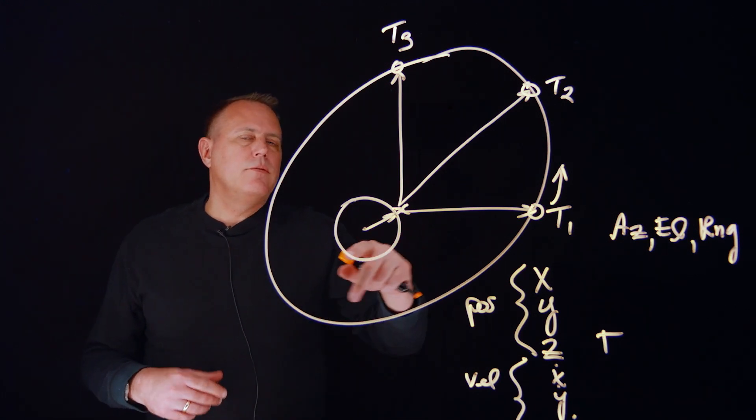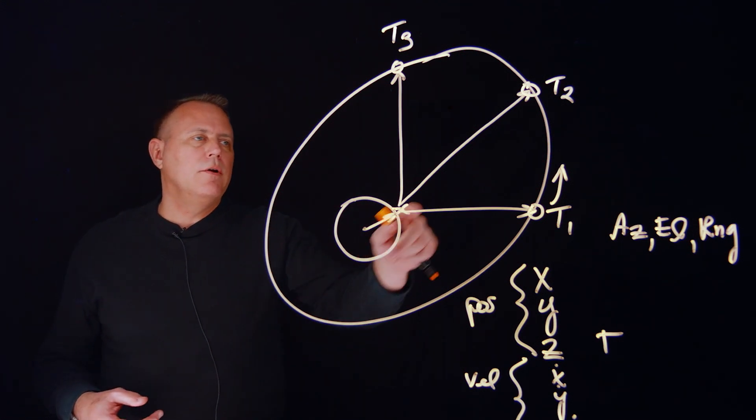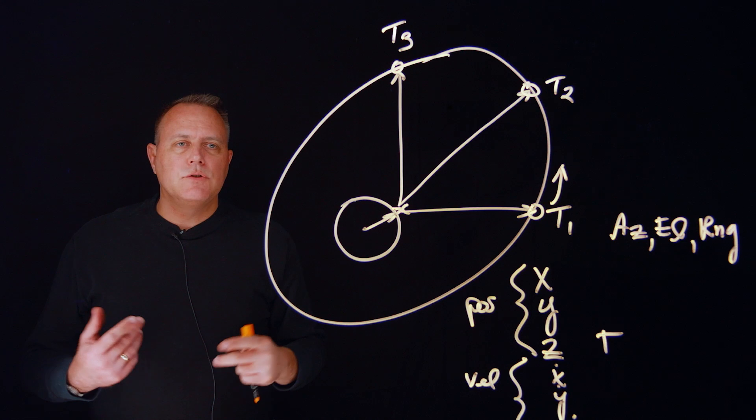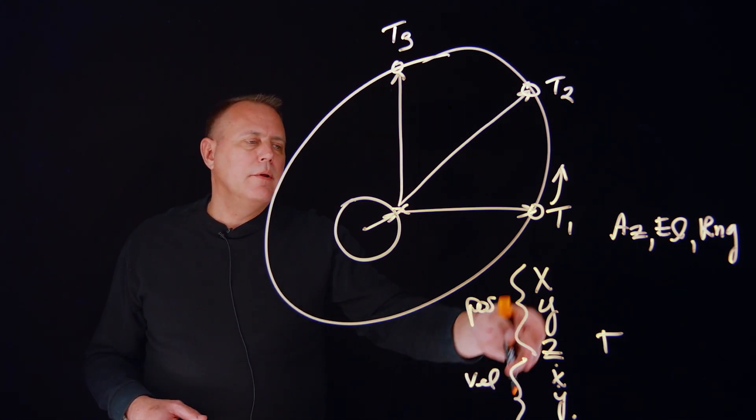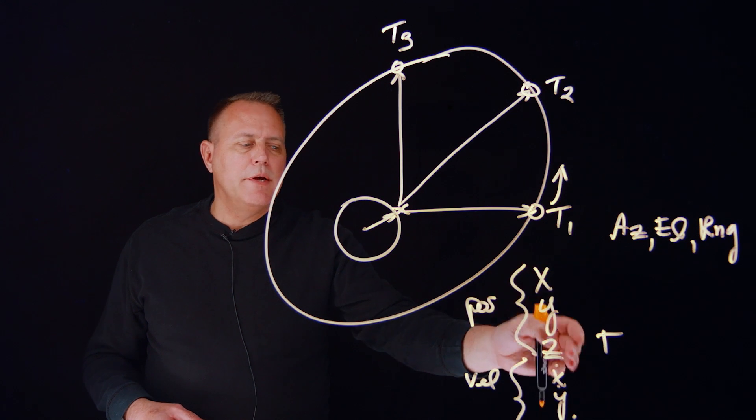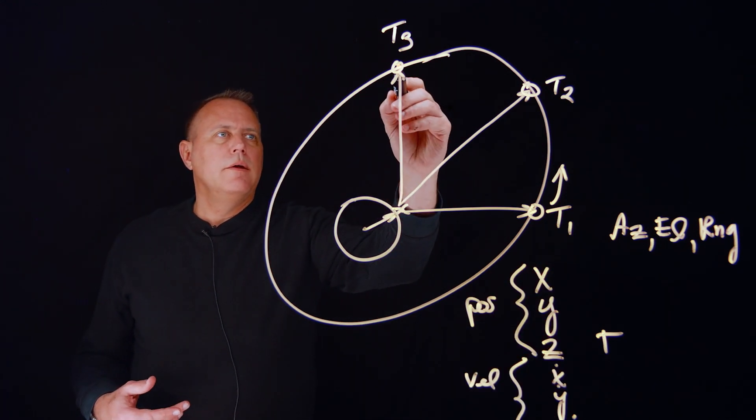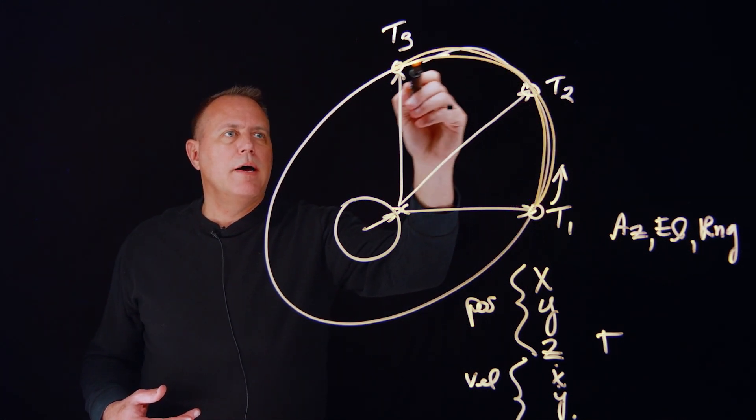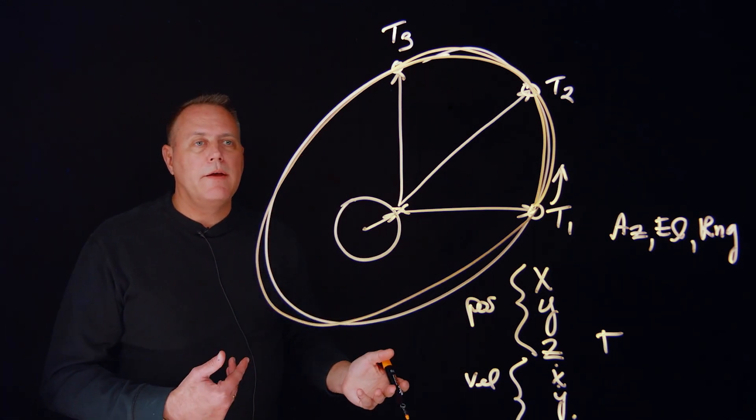Once we have this, the orbit determination process basically says, if I know the forces acting on the spacecraft, I know where it was at a couple points in time based on these measurements, I can now solve for the orbit of the spacecraft and determine the complete state vector x, y, z, x dot, y dot, z dot. And then with that, I can now propagate my positions backwards and forwards in time and predict the orbit for going into the future or going into the past.